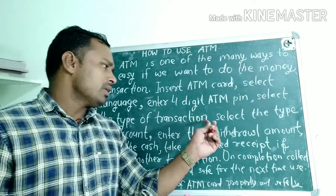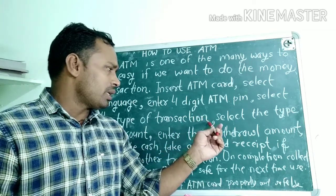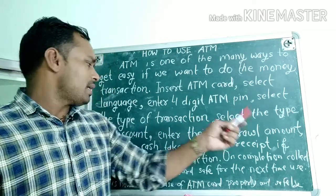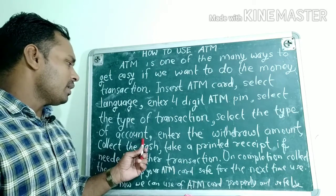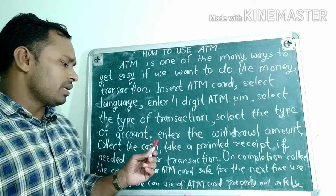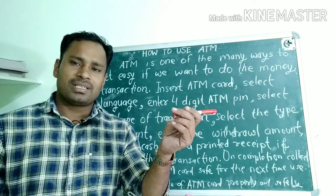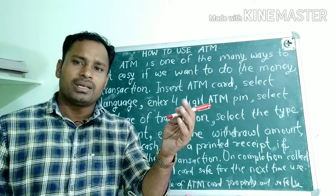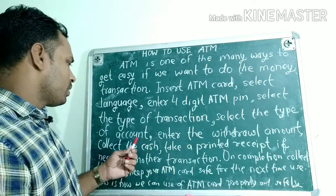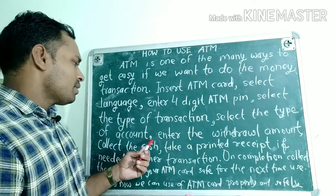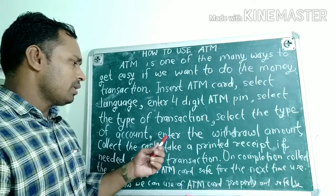After entering the PIN, select the type of transaction — choose the type of transaction you want. Then select the type of account — that is, choose your account type. Whether you have a savings account or another type of account, select it. Most people have savings accounts.